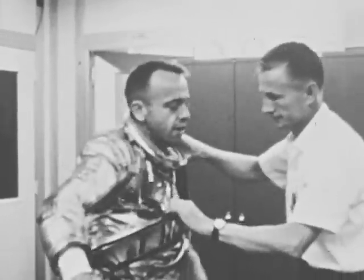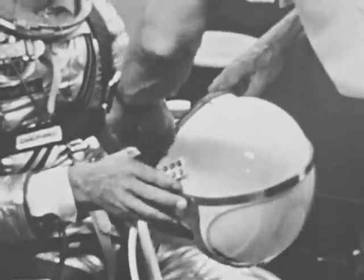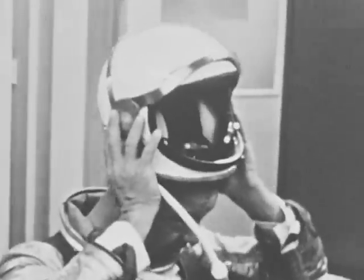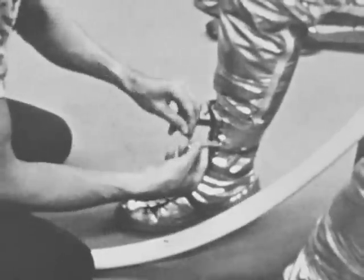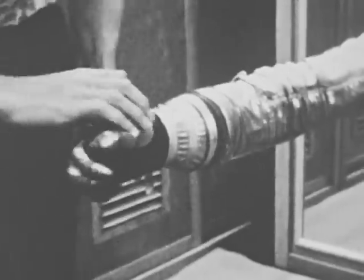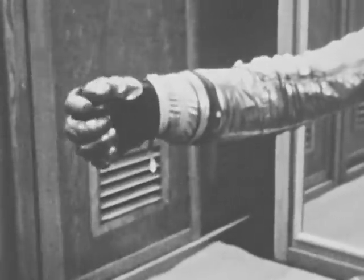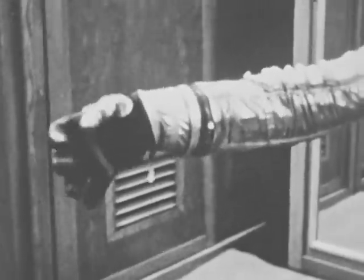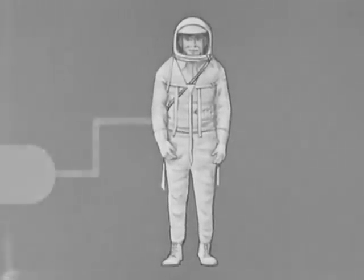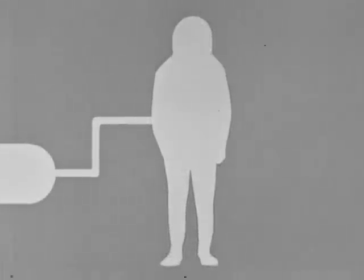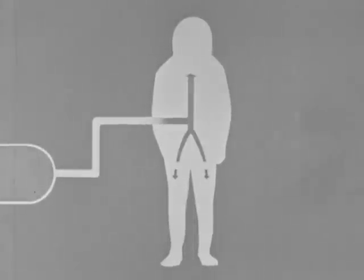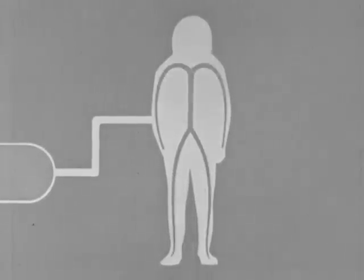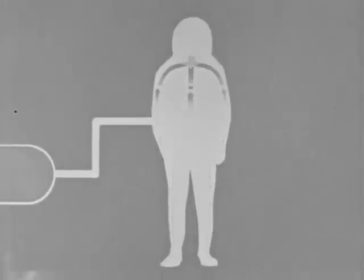So far we have studied the main problems of man's survival in space. Now let's look at the space suit and see how these problems were solved for early space flight. Oxygen, coming from a storage tank and pressured at five pounds per square inch, circulates throughout the suit to cool the spaceman's body and then passes into the helmet for breathing.